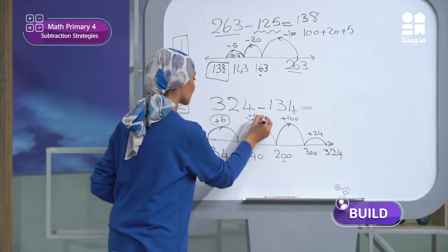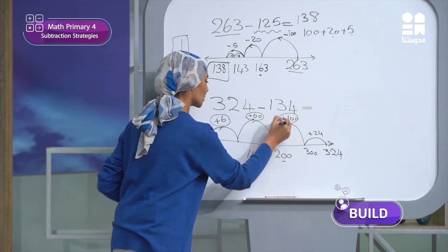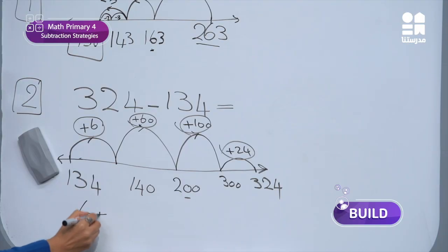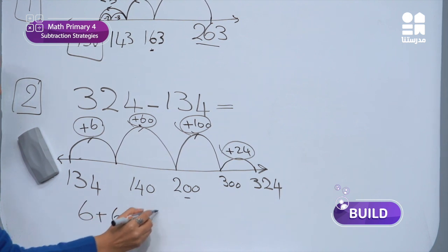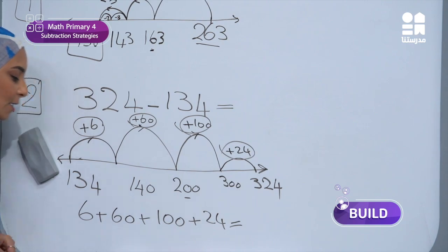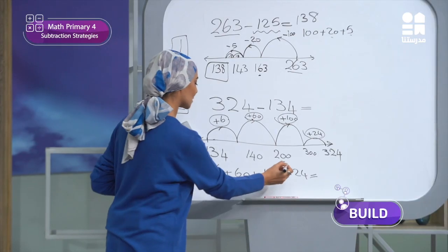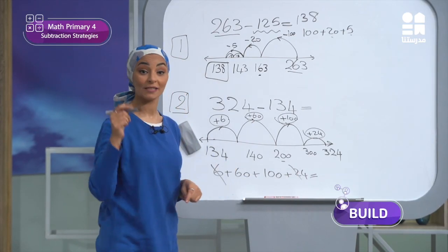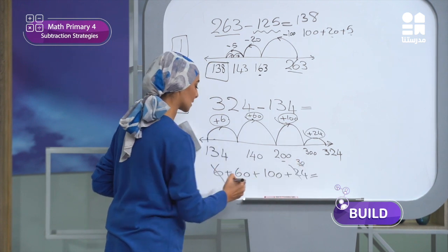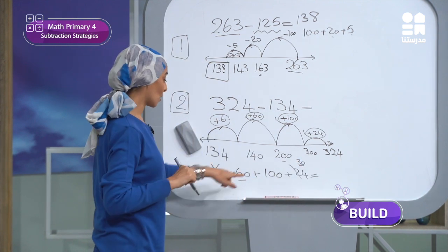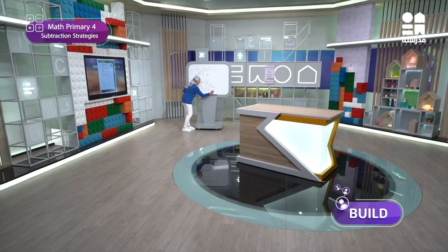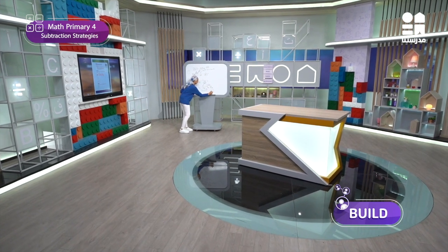Now I will add all these numbers to get the answer: 6 plus 60 plus 100 plus 24. I can compute: 24 plus 6 gives me 30, then 30 plus 60 equals 90, plus 100 equals 190. The answer is 190.